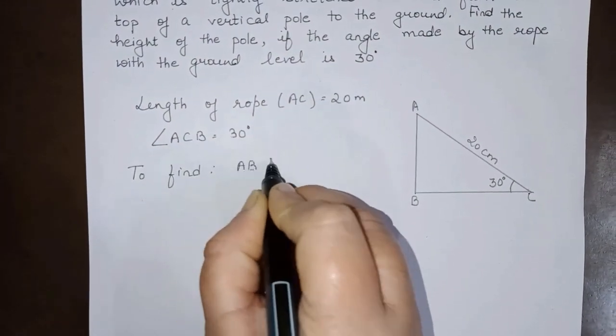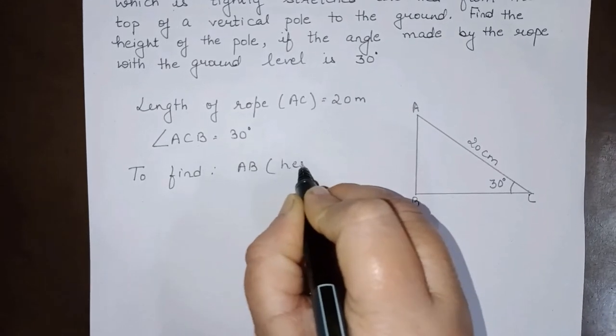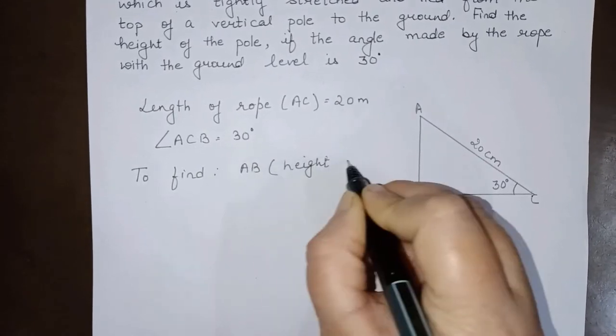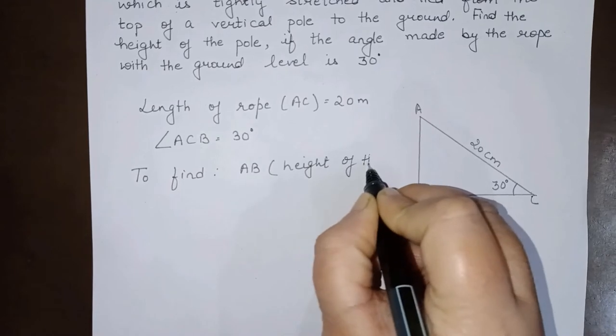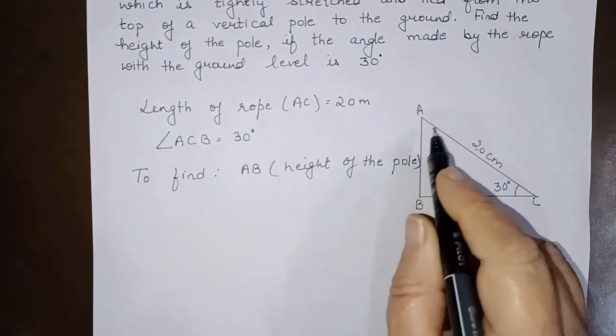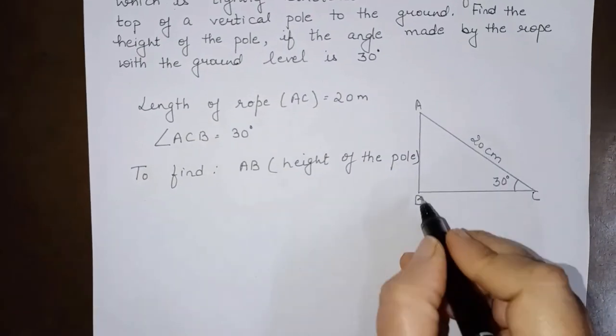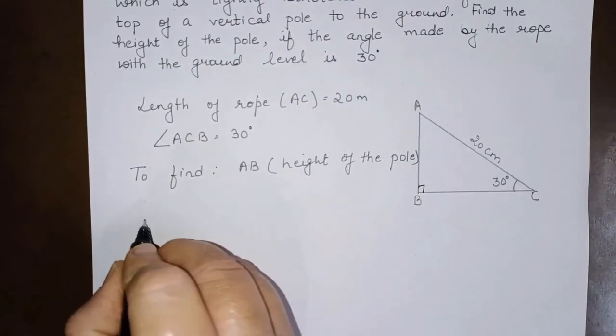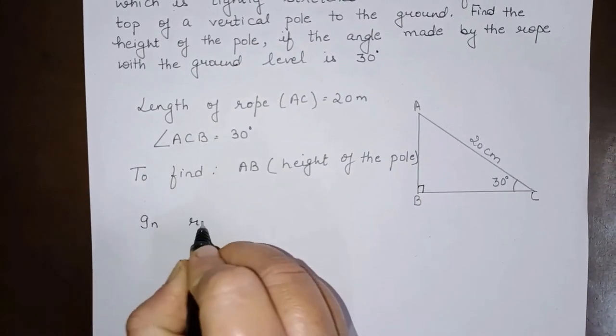AB, which is the height of the pole, we have to find. For this we will take this triangle. It is a right-angled triangle, so in right triangle ABC...